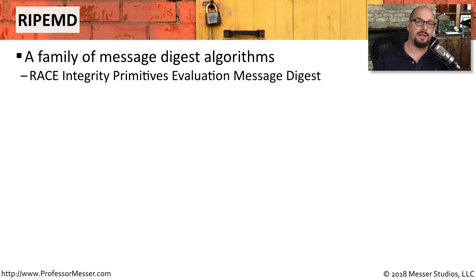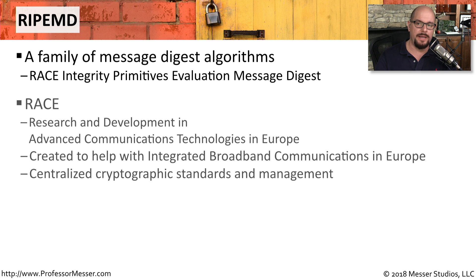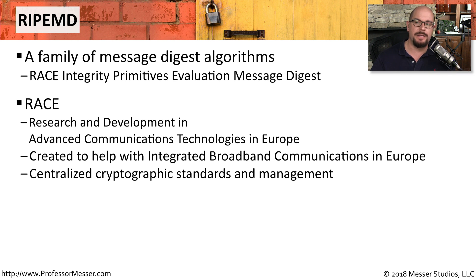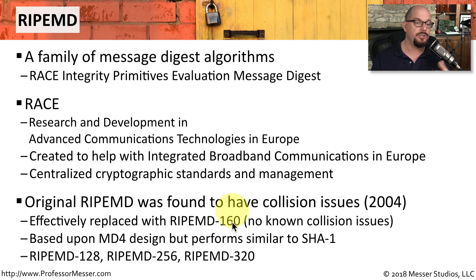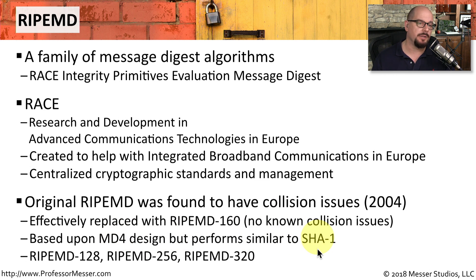Another hash method commonly used for networks is RIPE MD, the Race Integrity Primitives Evaluation Message Digest. RACE stands for Research and Development in Advanced Communication and Technologies in Europe. When Europe was creating a large integrated broadband network, they needed a message digest, so they created RIPE MD. Collisions were found with RIPE MD in 2004, so it was replaced with RIPE MD 160, which has no known collision problems. Although based on MD4, it effectively performed similarly to SHA-1.